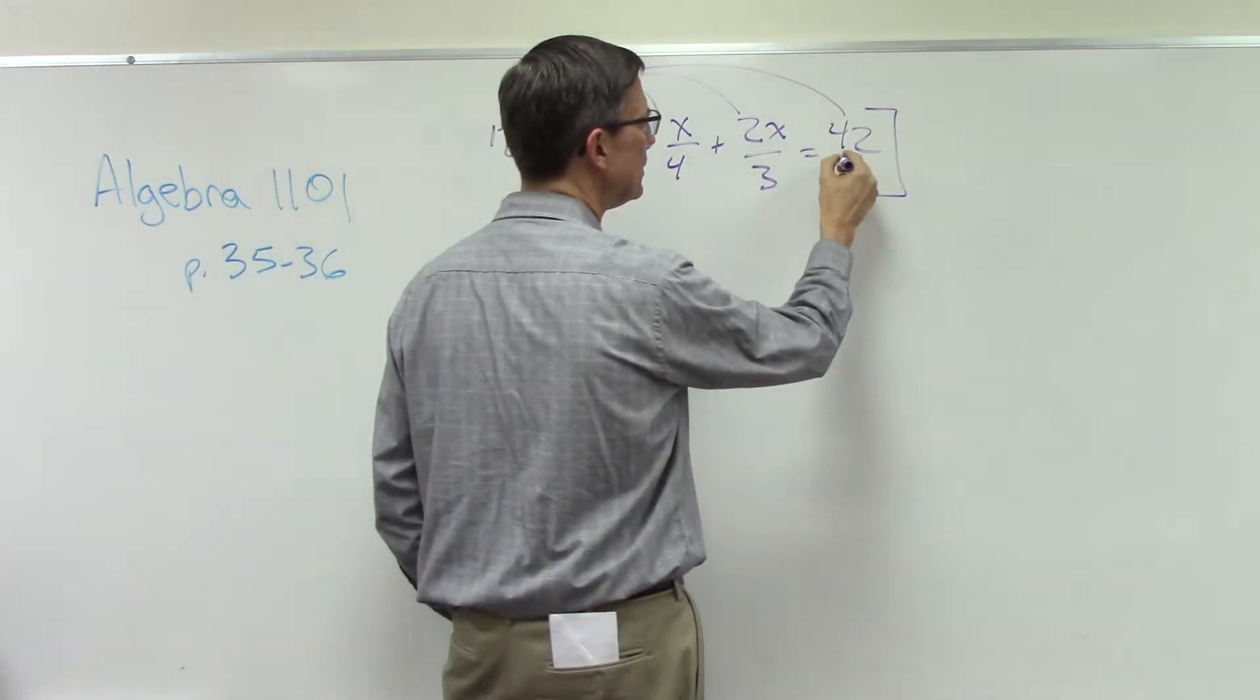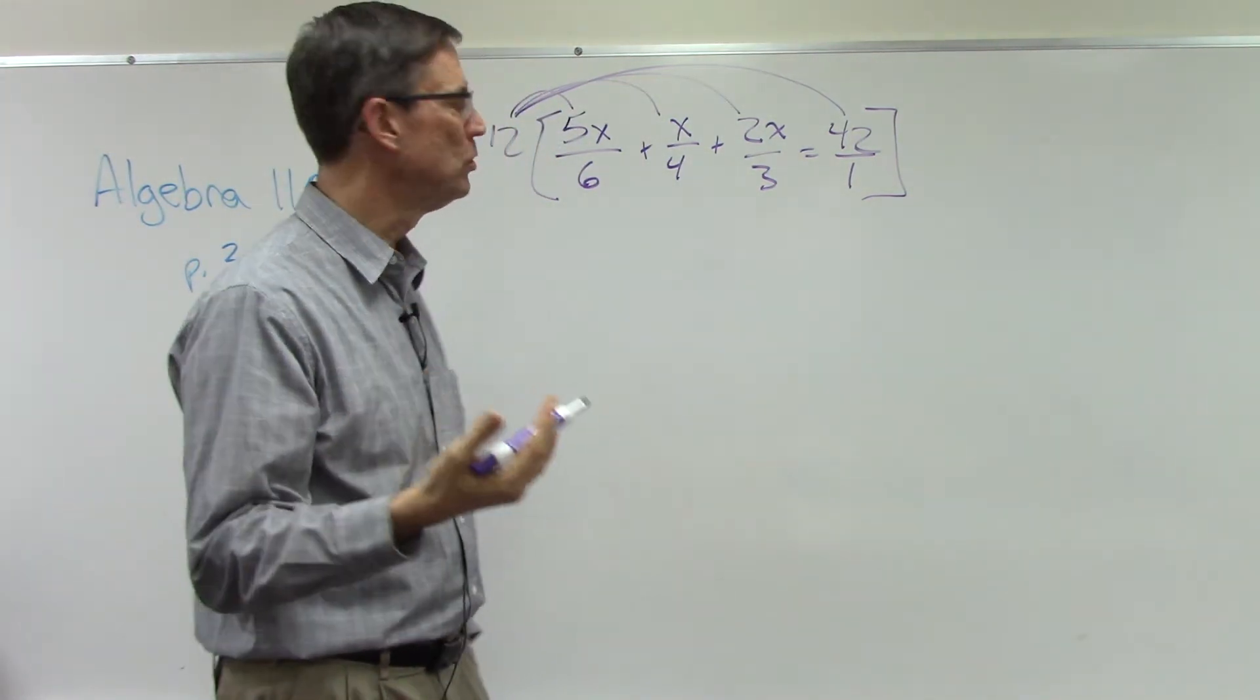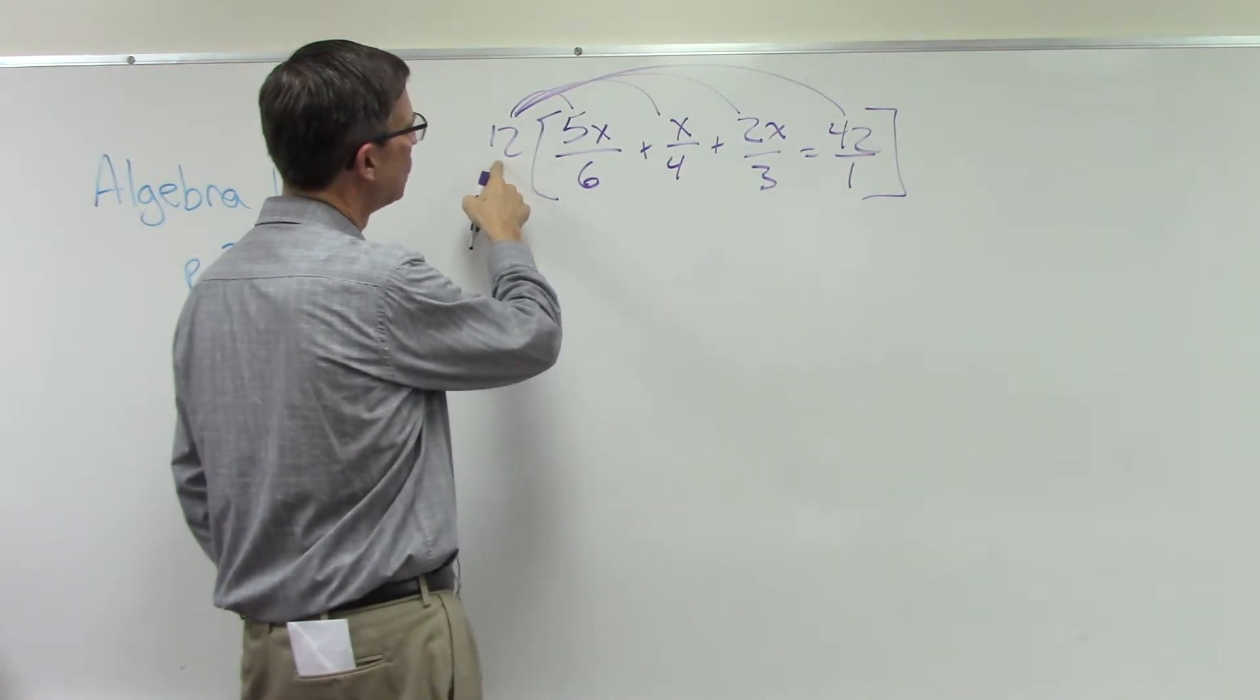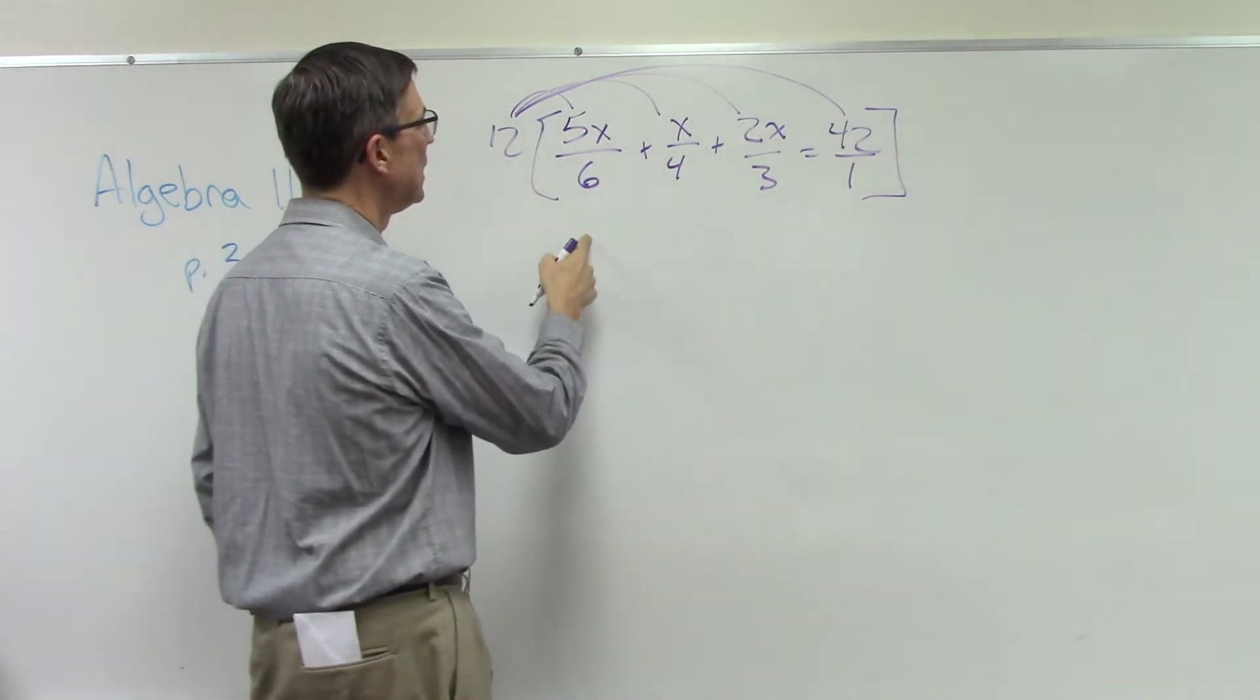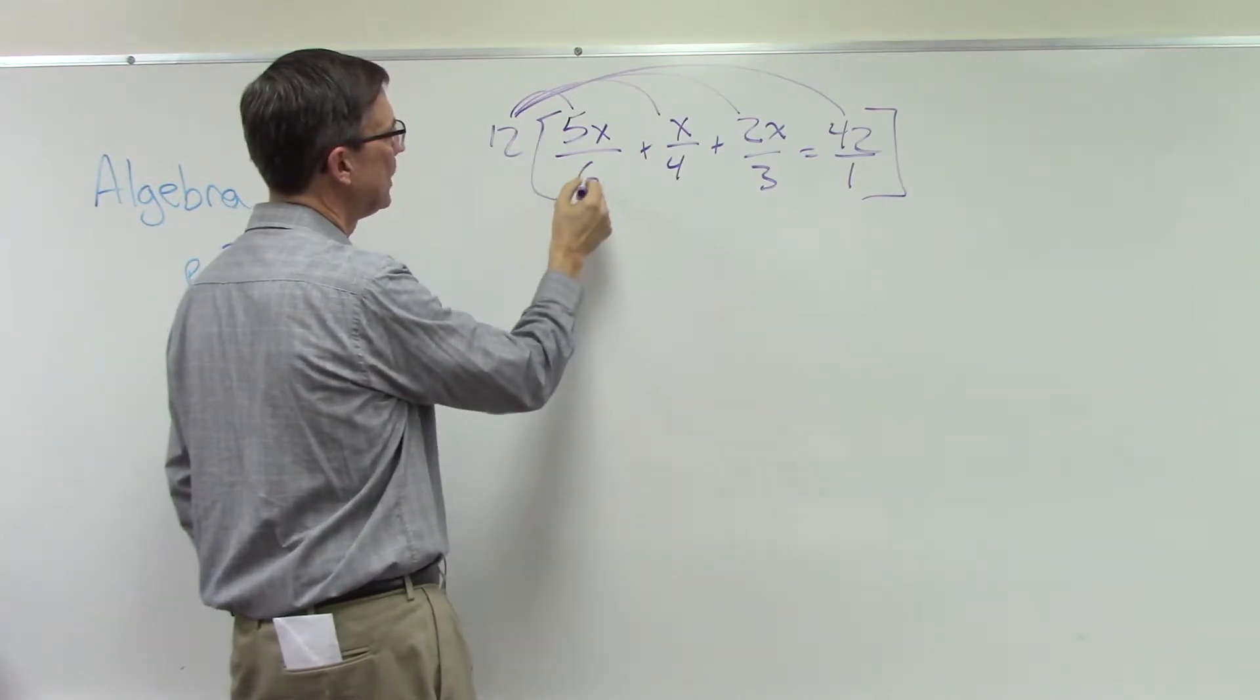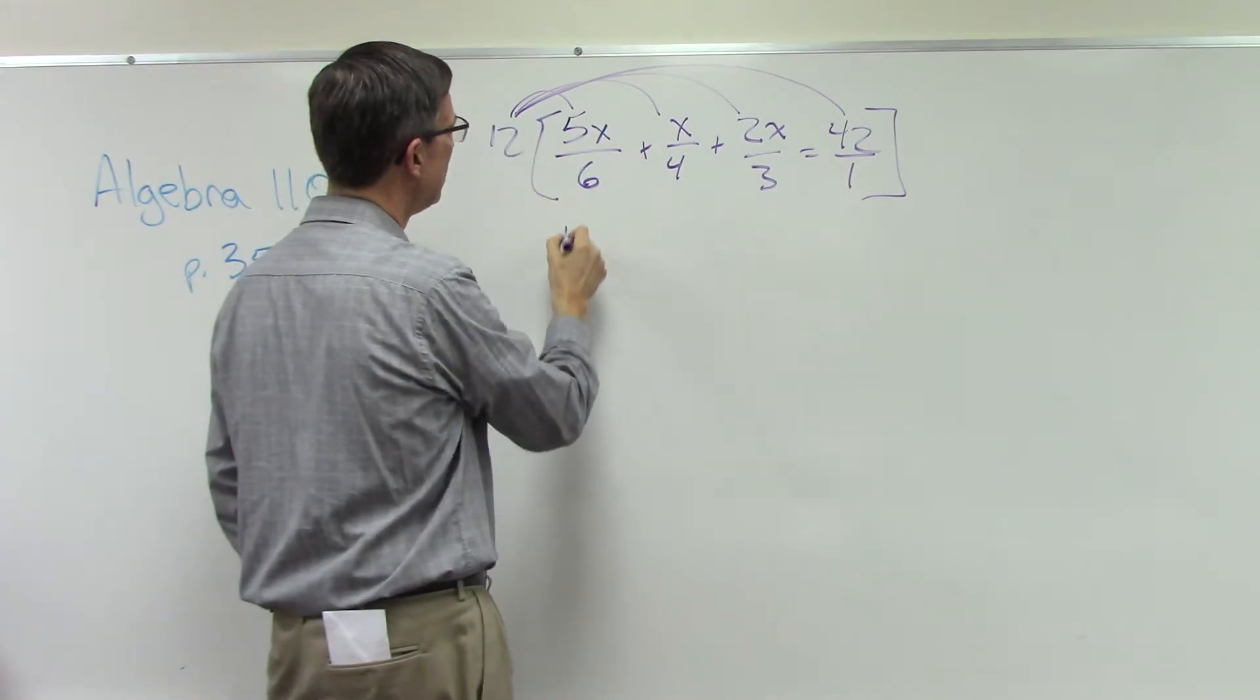Here what happens is we multiply the 12 times this. Now you could do 12 times 5 and get 60, take the 60, divide by 6 and get 10. Or what I like to do is cancel here, so 12 cancelled against the 6 is 2, and then 2 times 5x is 10x.